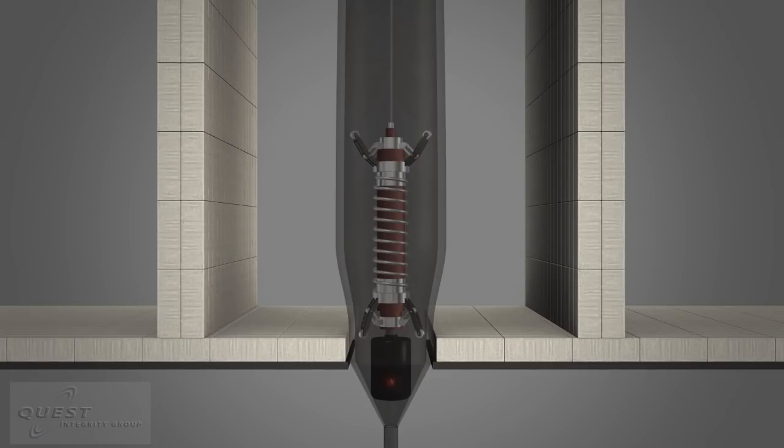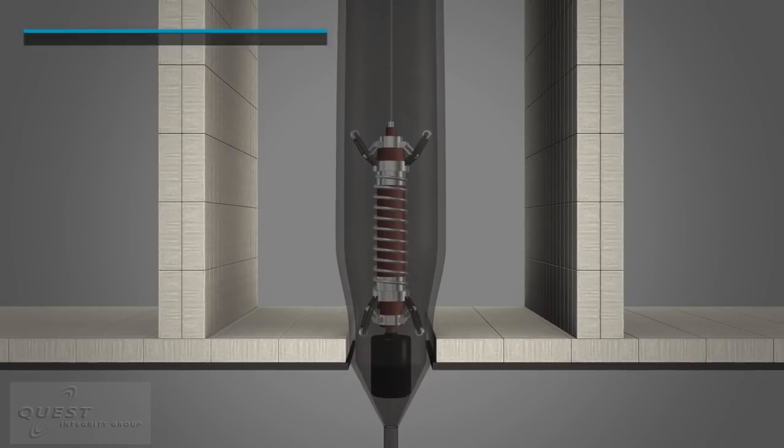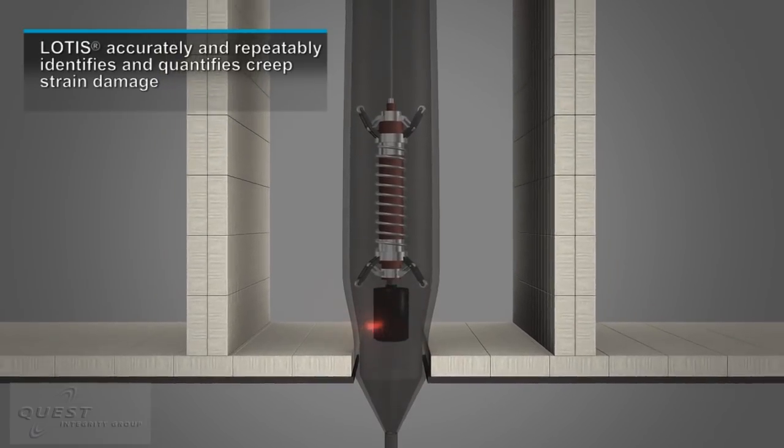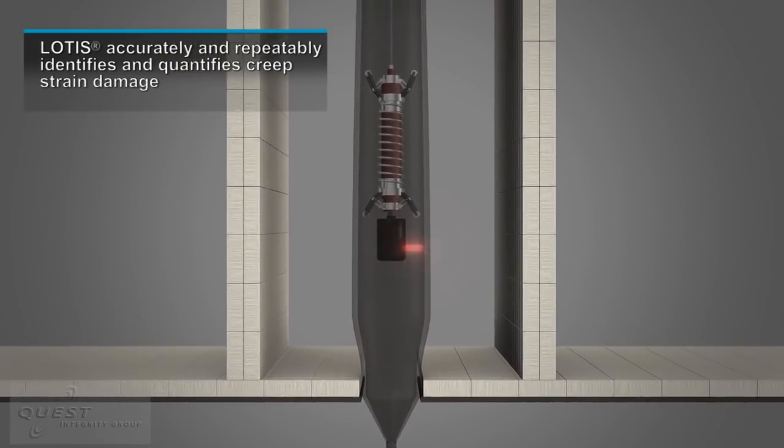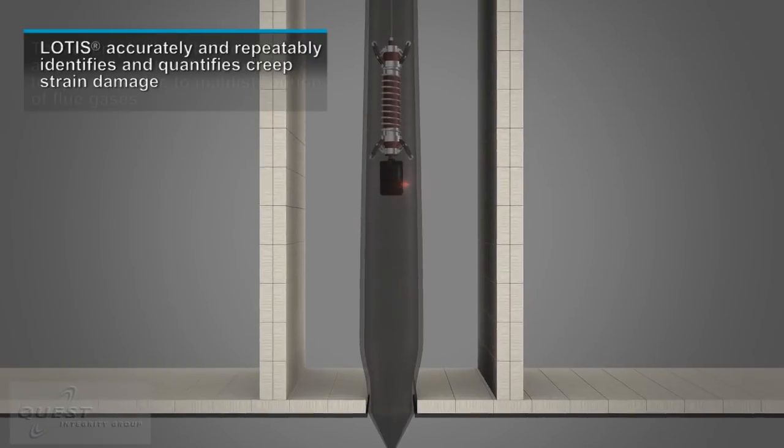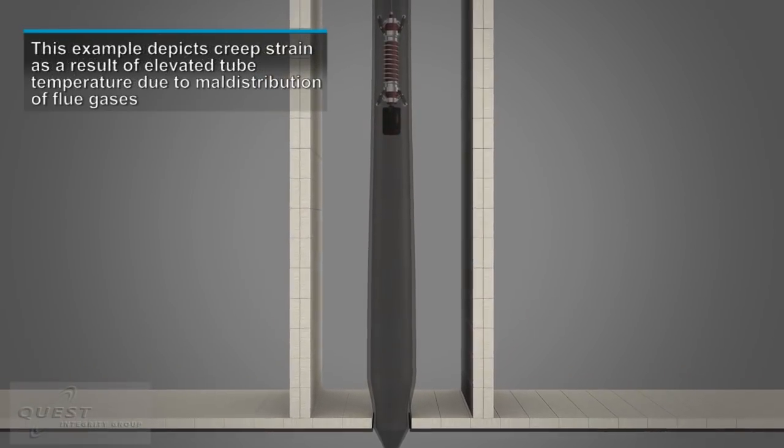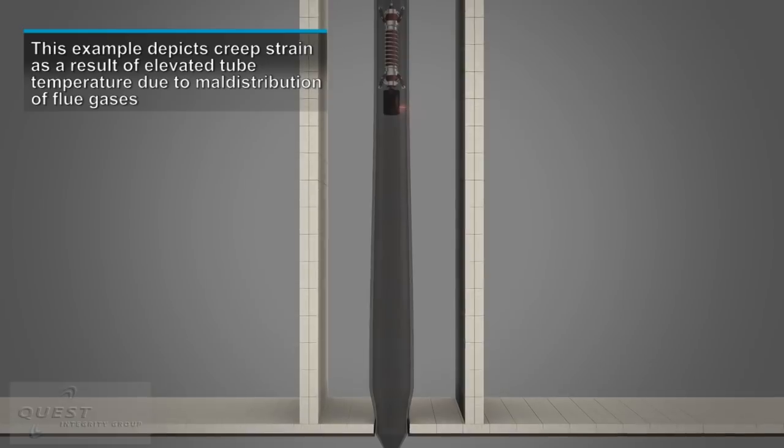The predominant failure mechanism is creep strain. LOTUS detects and quantifies creep strain damage caused by excessive temperature and pressures during operation. The rate of this damage mechanism is a function of exposure time at elevated temperature and the applied structural load.